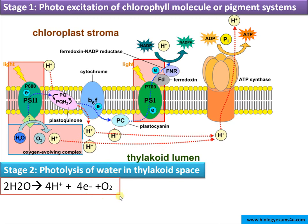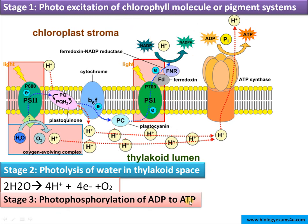Stage 2 is photolysis of water in the thylakoid lumen, which refills the lost electrons in the photosystem and also contributes to creating a proton gradient. Stage 3 is photo phosphorylation — the conversion of ADP to ATP. There is a proton gradient created by the photolysis of water.